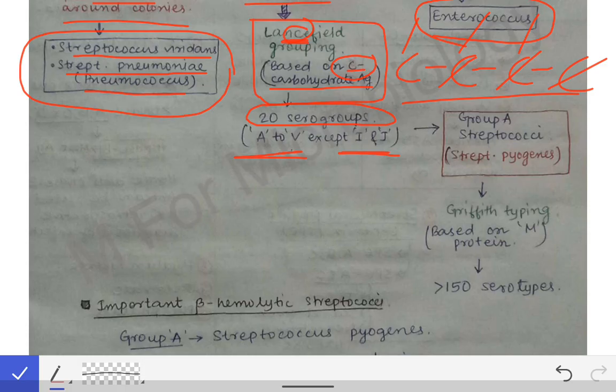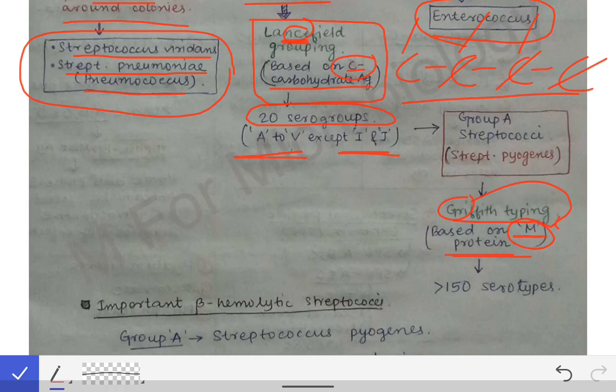Within group A streptococci there were multiple strains and serotypes, so group A streptococci was further classified by Griffith — called Griffith typing. This was based on the M protein, which is also present in the cell wall (mnemonic: G for M — Good Morning). Based on the M protein in the cell wall, group A streptococci are classified into more than 150 serotypes by Griffith typing.